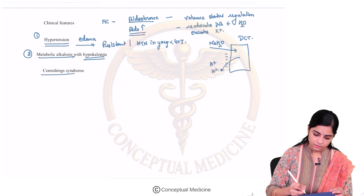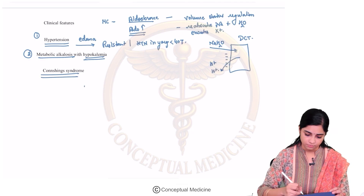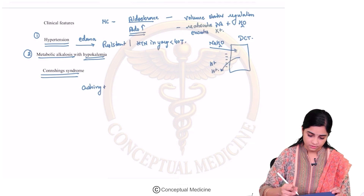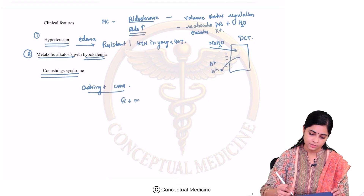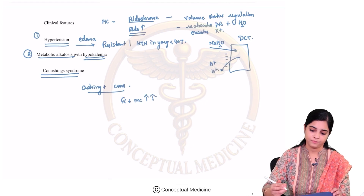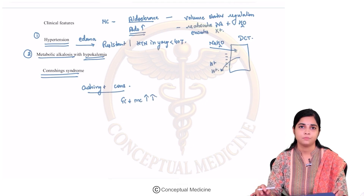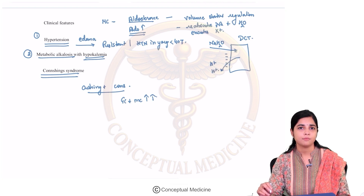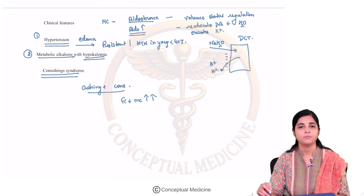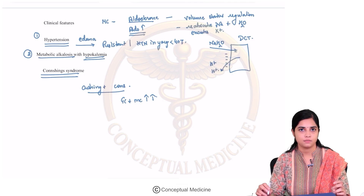Connshing syndrome is Cushing syndrome combined with Conn's syndrome — that means there is glucocorticoid plus mineralocorticoid excess. Young-onset hypertension, resistant hypertension, and metabolic alkalosis with hypokalemia are the features of mineralocorticoid excess.